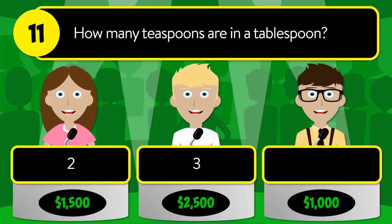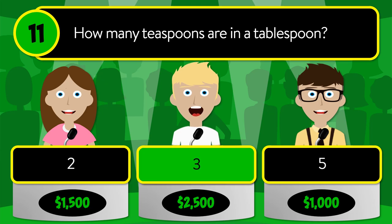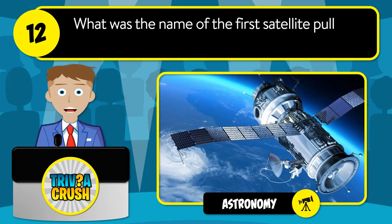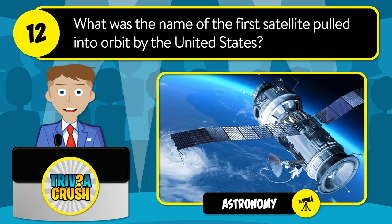Question number eleven: how many teaspoons are in a tablespoon? Is it two, three, or five? The correct answer is three.